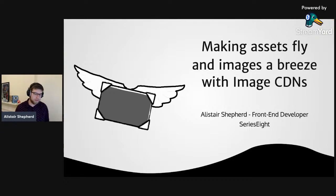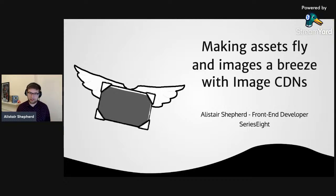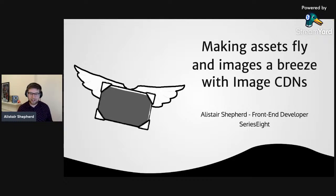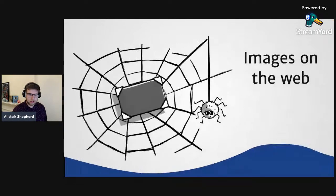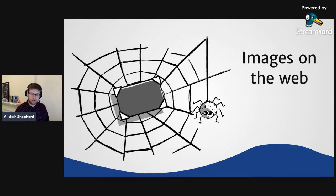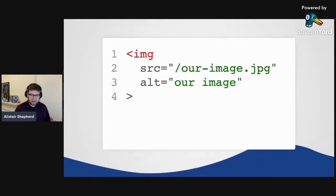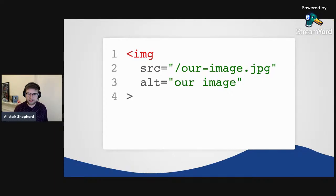I'm going to be talking about image CDNs today and particularly how we can use them for performance and making image development on the web a bit easier. I don't have any experience with .NET — it's fairly agnostic so it shouldn't be a problem, but I will have examples in other languages. So first, I want to talk about the current state of images on the web. Images are easy, right? You just write an image tag, pop a source attribute and an alt attribute on there, and you're done.